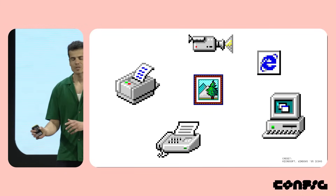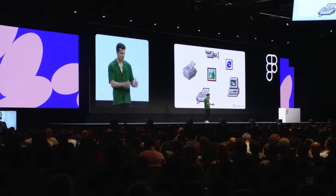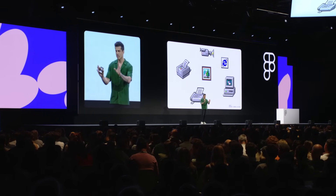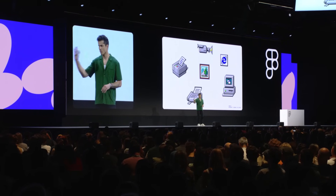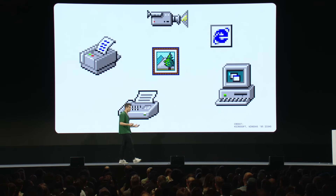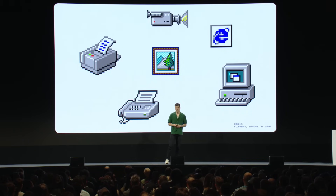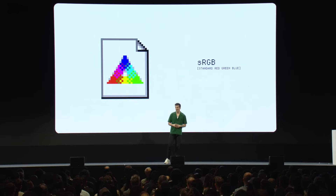Hardware and software producers could choose to embed color profile information in their products, or they could just simply choose not to. Even if they did, there's no guarantee any of your other products could even read it. So if you had a digital image in 1996 and it looked anything the same on your computer screen, on your printer, on your camera — that was purely an accident.